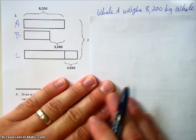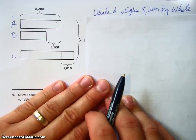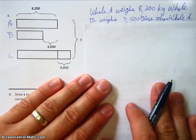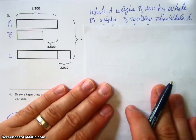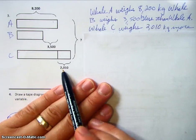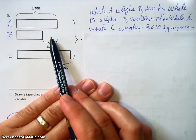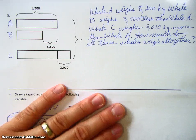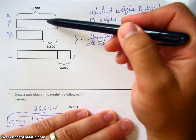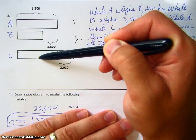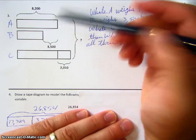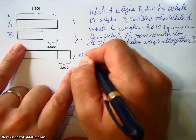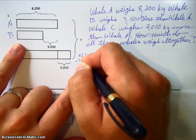Whale A is going to weigh 8,200 kilograms. Whale B, a little bit smaller, is going to weigh 3,500 kilograms less than whale A. And then finally whale C is going to weigh 2,010 more than whale A. We want to know how much the three whales weigh all together. We need to get to a point where we can add the values of all three bars, but right now we only have the measurement of whale A. So first we find out the measurement of whale B: we take 8,200 minus 3,500.